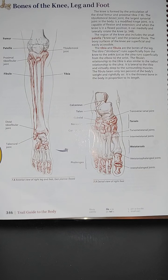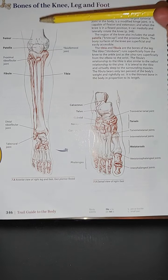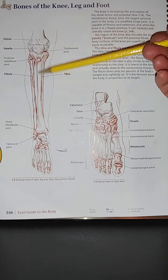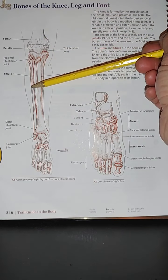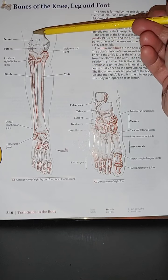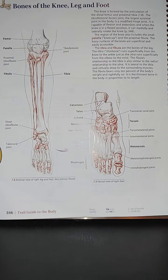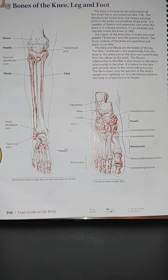The knee is formed by the articulation of the distal femur and proximal tibia. You can see the fibula is not even touching the femur. The tibial-femoral or knee joint is the largest synovial joint in the body. It is a modified hinge joint, capable of flexion and extension, and when the knee is in a flexed position, it can also